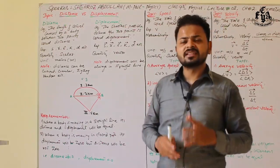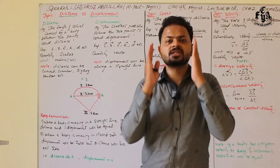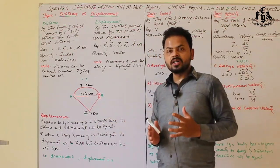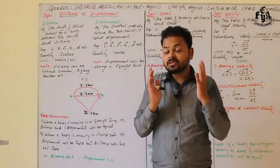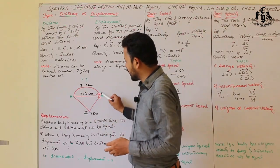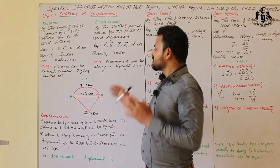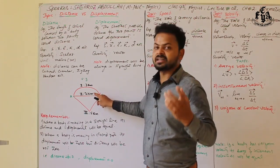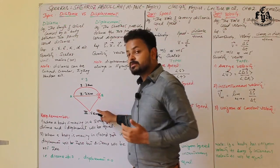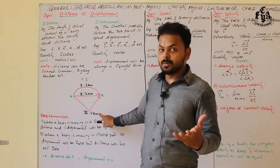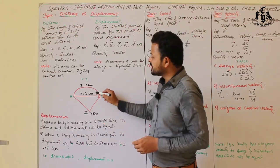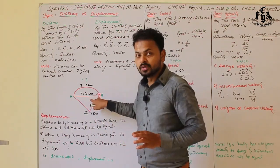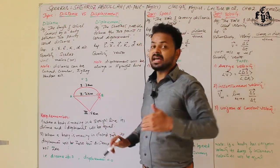One important thing to note: displacement is always a straight line. For example, if a person wants to move from point A to point B, and three paths are available — path one covers 3 km, path two covers 2 km, and path three covers 5 km — all three are distances. The shortest, path two at 2 km, is called displacement.